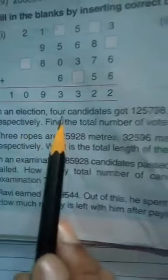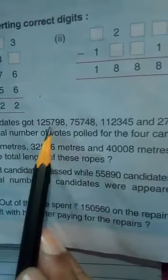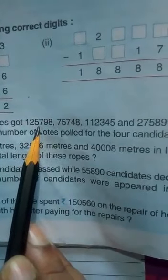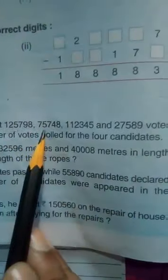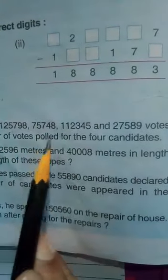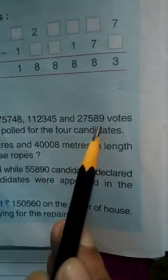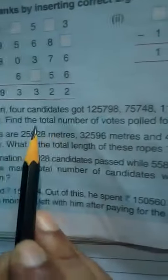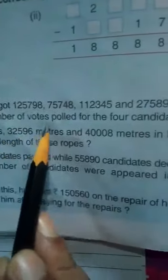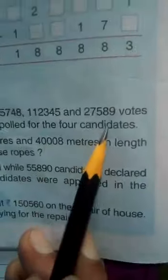In an election, four candidates got 1,25,798, 75,748, 1,12,345 and 27,589 votes respectively. Find the total number of votes polled for the four candidates.